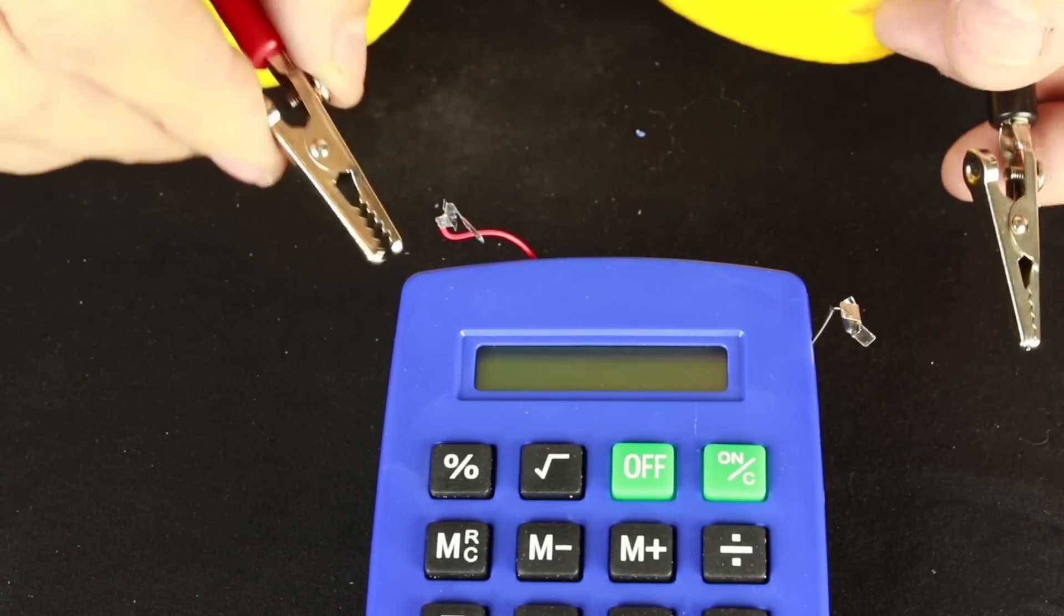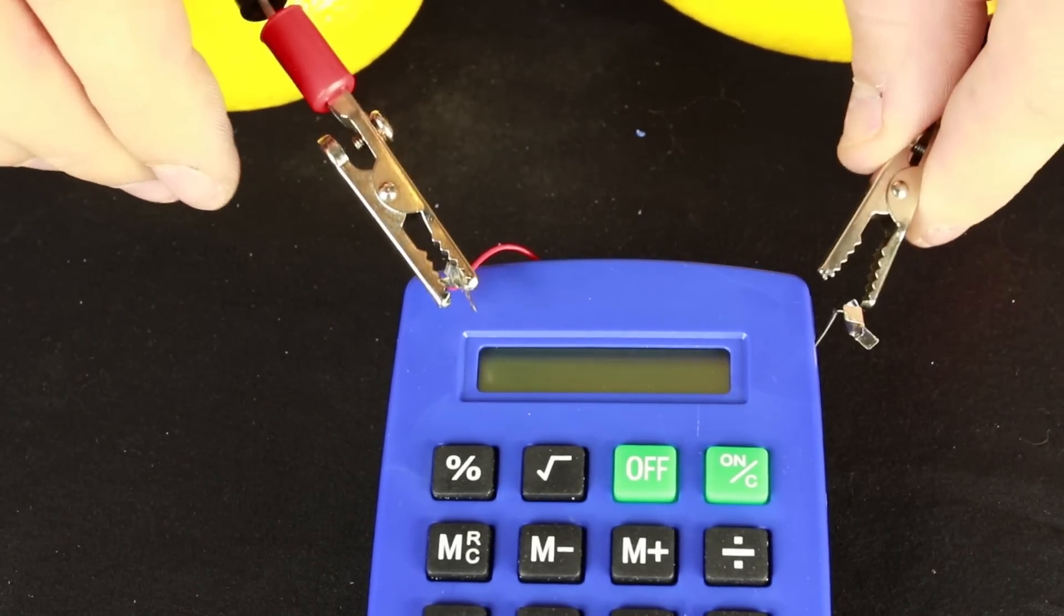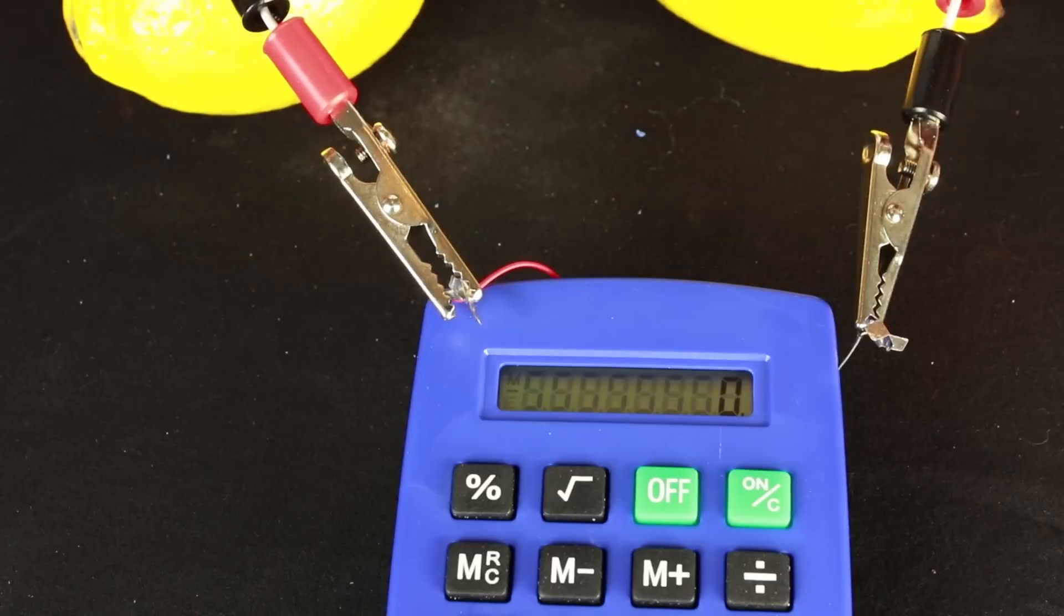Start by connecting the copper to the red wire and the zinc to the black wire. And there you have it. At this point your calculator should be able to turn on and do functions.